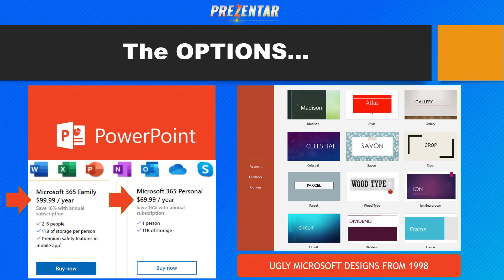A lot of these companies have all pretty much switched to a recurring business model because it just allows them to make a ton more cash — knowing that you're going to pay them for the next one, two, five, ten years. You get all these different softwares bundled in like OneDrive — you might not even use Excel, but they shove all these different apps down your throat and want you to pay up to $100 a year, recurring.